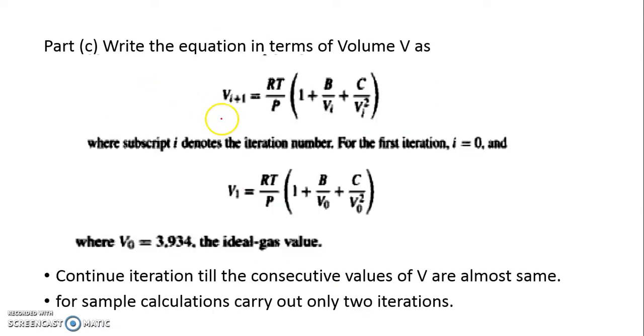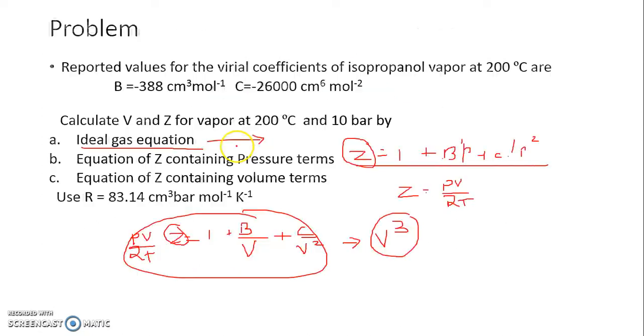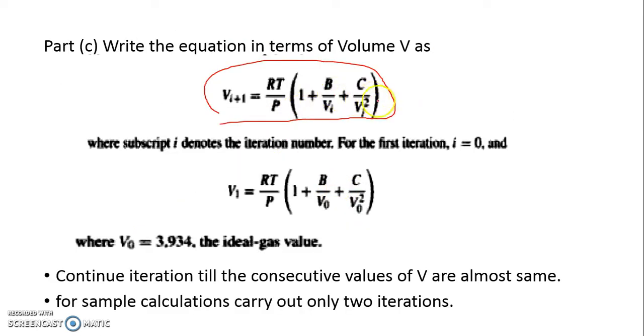This becomes direct substitution method. So initially your V0 is your ideal guess. That will give you V1. Then V1 substitute here you get V2. Likewise, you keep on doing it till Vn minus Vn plus 1 is less than or equal to some error. This error term you need to define. This error term has naturally unit involved in it, so you don't need to go to always 0.001 equals. It has to be clubbed with the unit which we are working with.